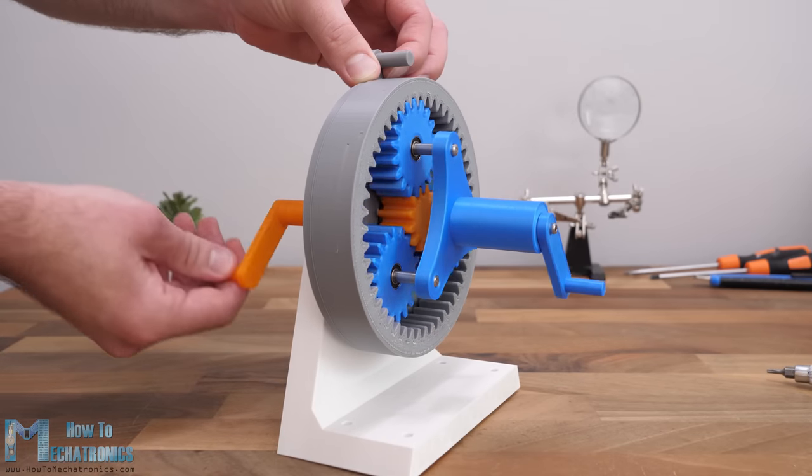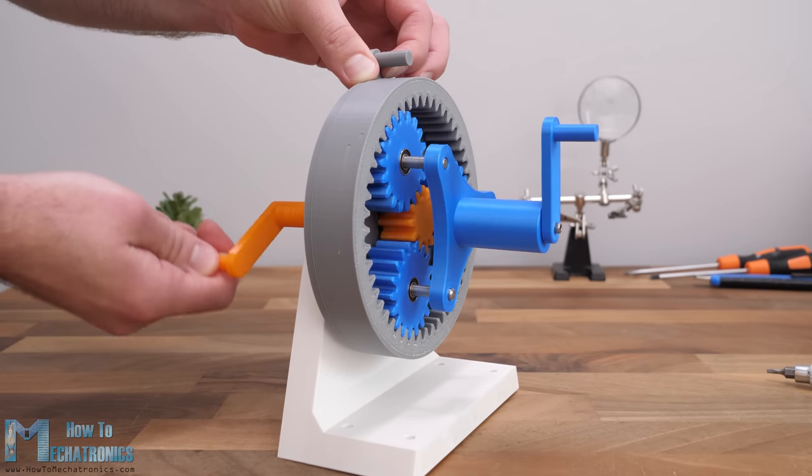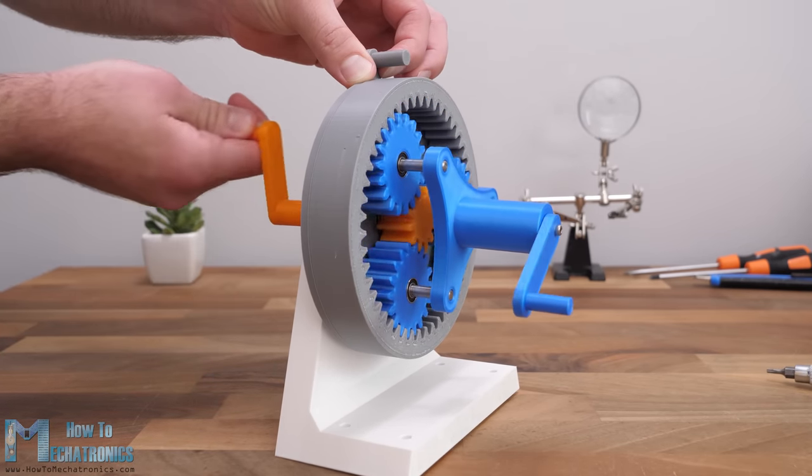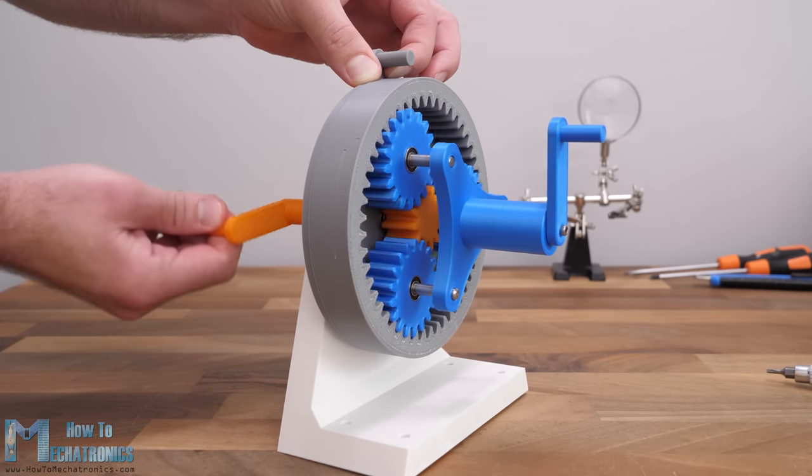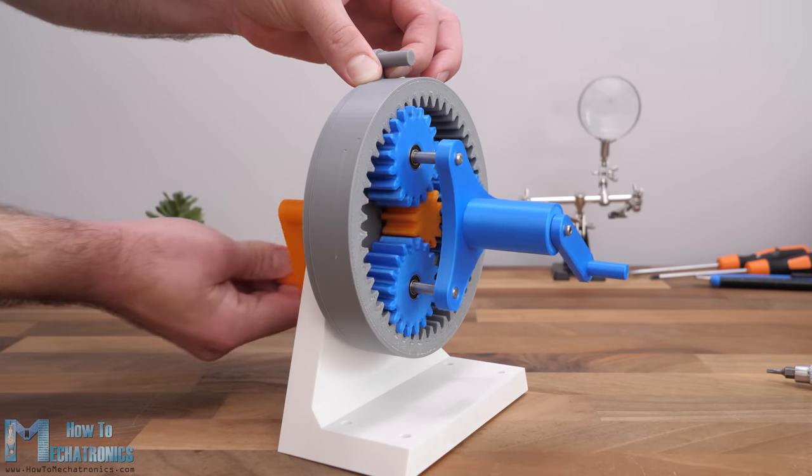This is the most common scenario for a planetary gearbox. To reduce the speed and increase the torque for industrial and construction machines, for servo motors in robotics applications and so on.